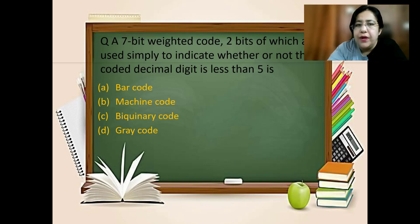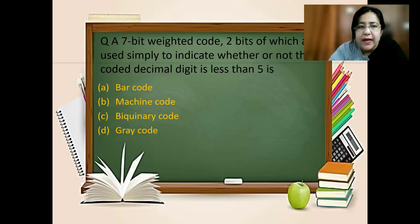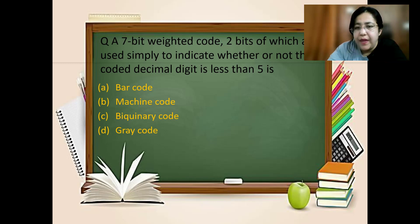Next question: a seven-bit weighted code, two bits of which are simply to indicate whether or not the coded decimal digit is less than five — is it a barcode, machine code, bi-quinary code, or gray code? Explore this and tell me in the comments what the answer is.